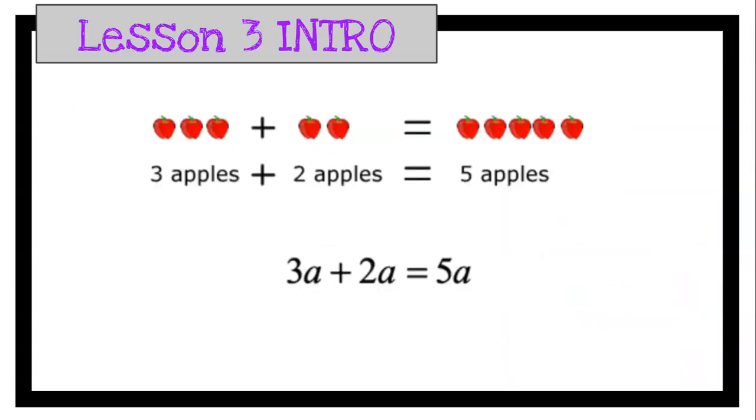So an example of like terms would be we have three apples, and we get two more apples, so now we have five apples. So we could express that as 3A plus 2A equals 5A.